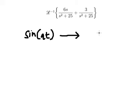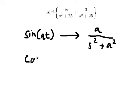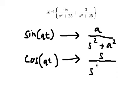And they should be about a over s squared plus a squared. And the second one, this one, that should be about s over s squared plus a squared. Now if we look carefully about this one.